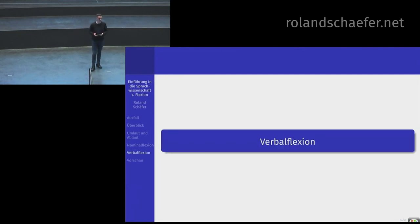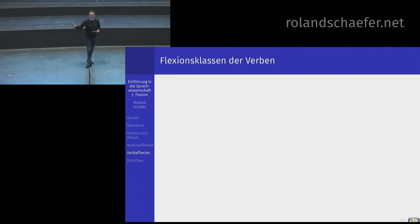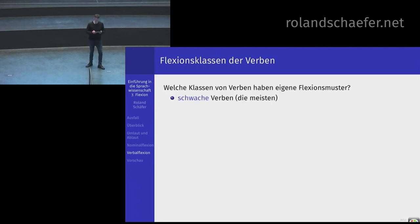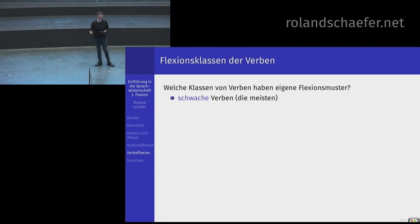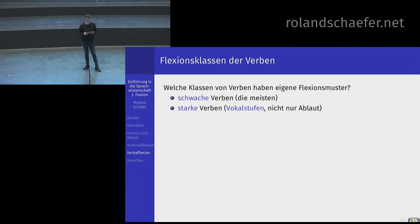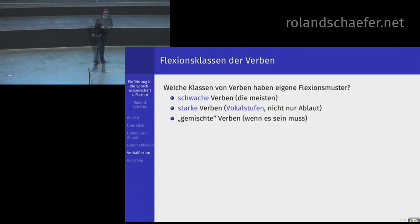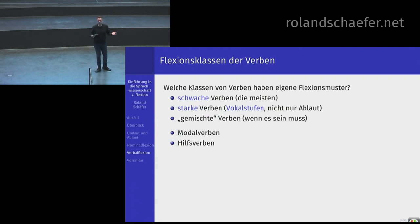Dann erzähle ich Ihnen jetzt noch, wie das Verb funktioniert – beim Verb ist alles viel einfacher. Beim Verb müssen wir auch wieder zwischen verschiedenen Klassen unterscheiden: wir haben die schwachen Verben, die keinen Ablaut haben; die starken Verben, die haben Vokalstufen – da bleibt Ihnen nicht viel anderes übrig, als Tabellen auswendig zu lernen. Dann gibt es noch sogenannte gemischte Verben, Modalverben, die anders flektieren, und Hilfsverben – sein flektiert total chaotisch, haben flektiert seltsam. Das müssen Sie auch lernen.